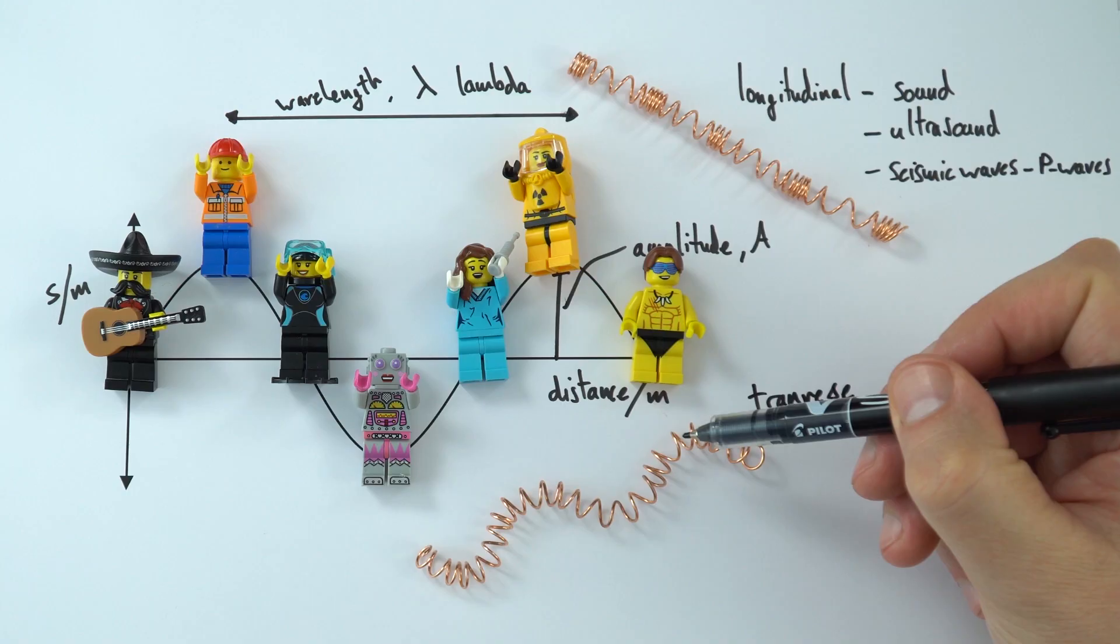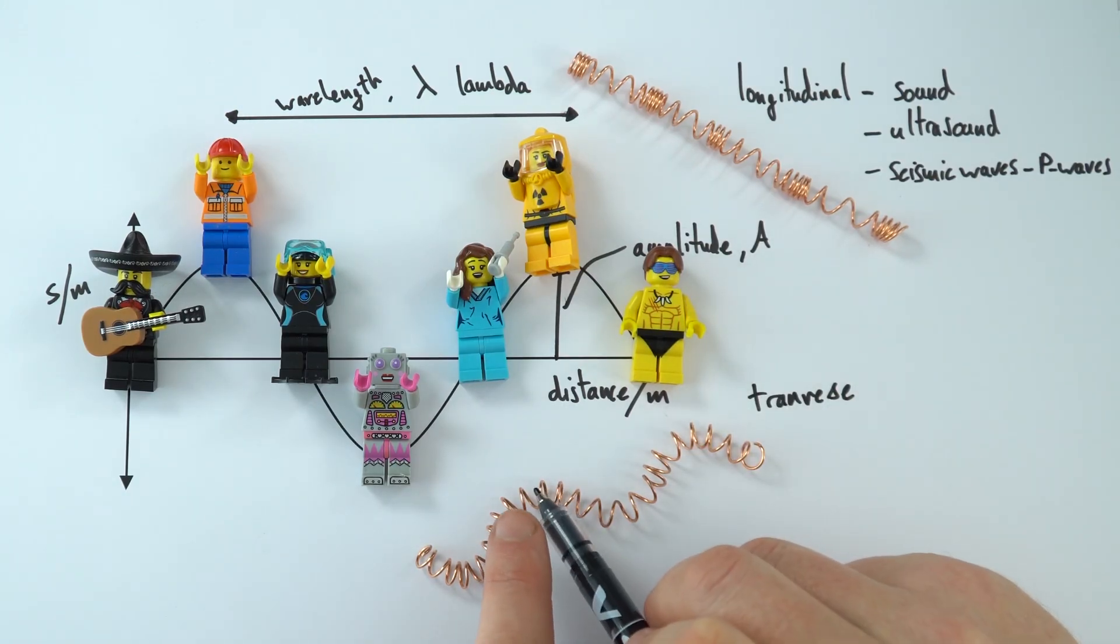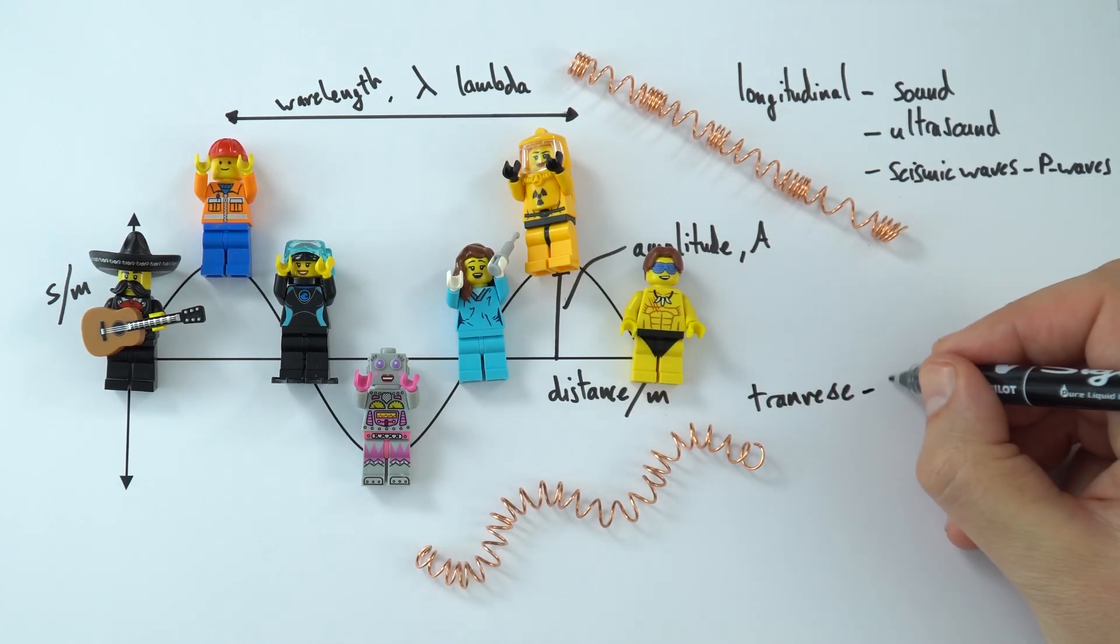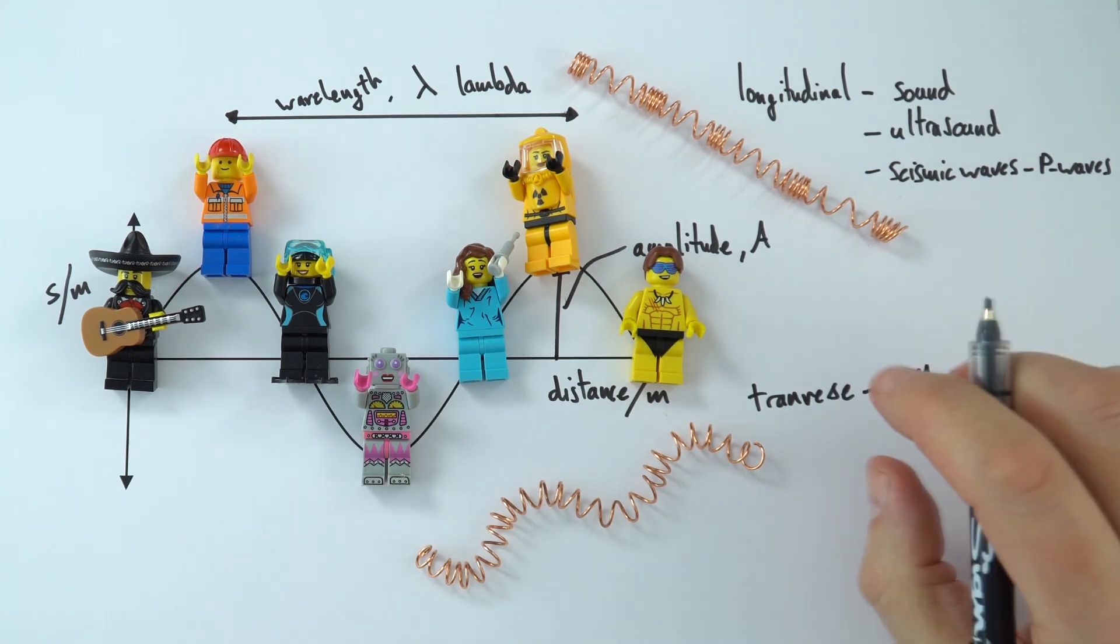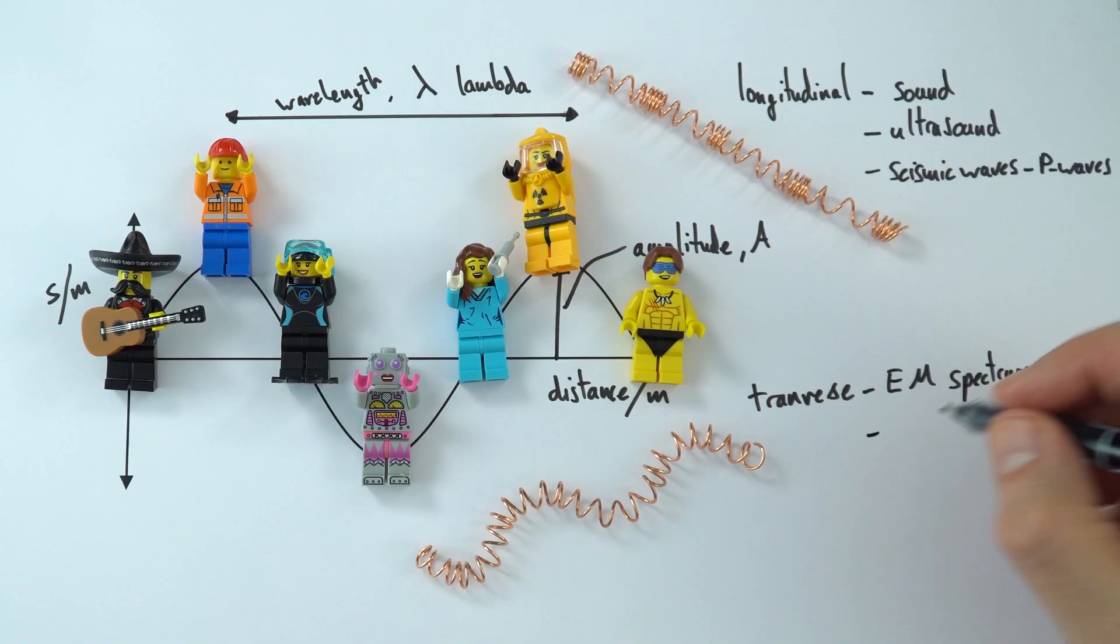It's how much the particles are disturbed from their rest position. We can think about the wavelength being from maybe a peak to a peak or a trough to a trough. And examples of transverse waves include the whole of the electromagnetic spectrum. I've got a whole set of videos about this, but this includes radio, light, x-ray and so on.